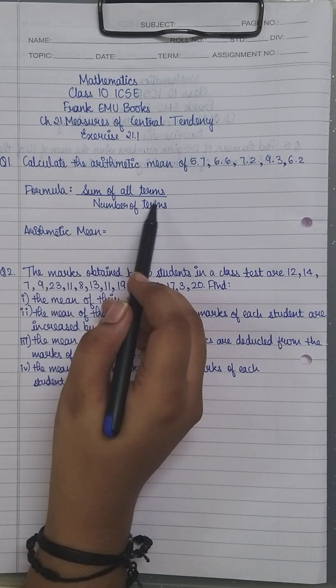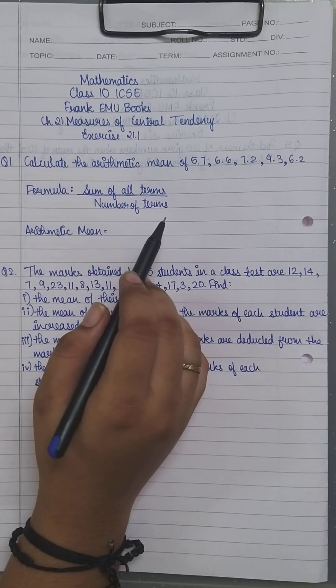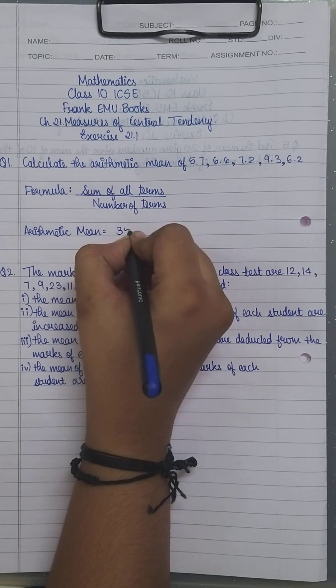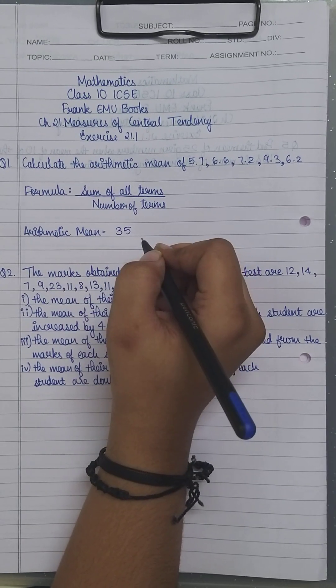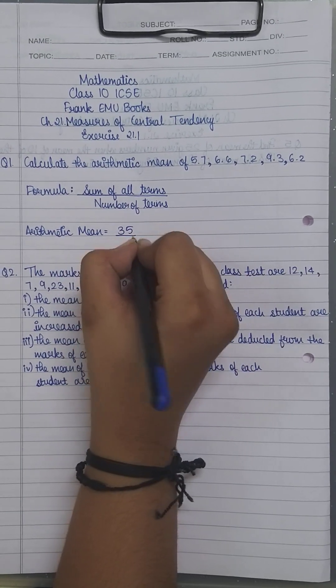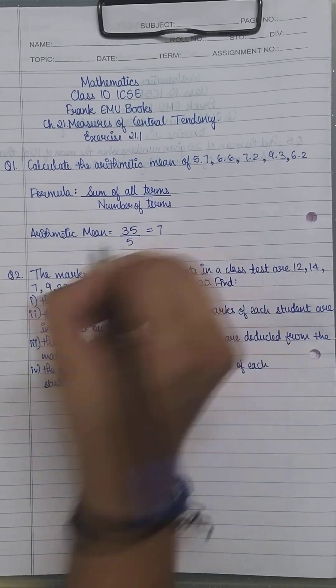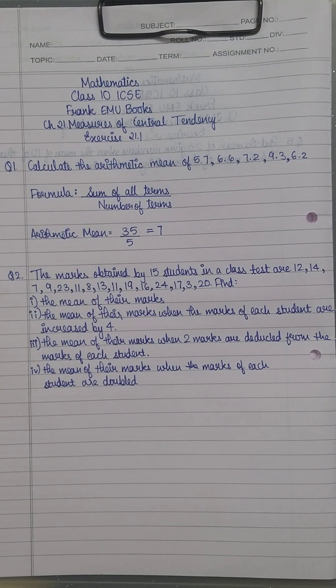The sum of these terms is 35 (I've done that beforehand, you can cross-check) and the number of terms is 5. It's very simple - your arithmetic mean is 7. Now with this concept, let's move on to question 2, which is similar but has more sub-parts.